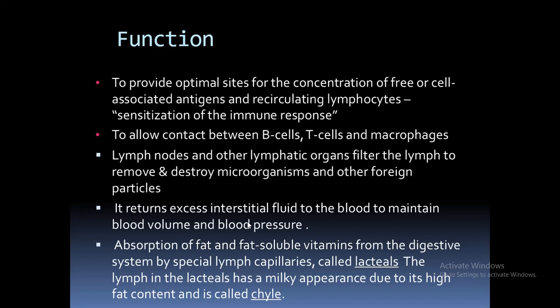What are the different functions of the lymphatic system? First, to provide optimal sites for the concentration of free or cell-associated antigens and recirculating lymphocytes — or sensitization of immune response. Then, to allow contact between B cells, T cells, and macrophages. Lymph nodes and other lymphatic organs filter the lymph to remove and destroy microorganisms and other foreign body particles. It returns excess interstitial fluid to the blood to maintain blood volume and pressure. Another function is to absorb fat and fat-soluble vitamins from the digestive system by special lymph capillaries called lacteals. The lymph in the lacteals has a milky appearance due to its high fat content and is called chyle.